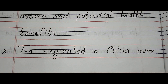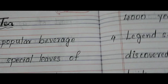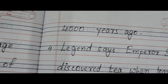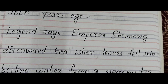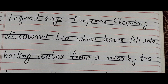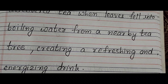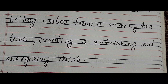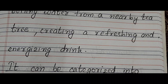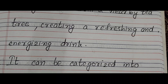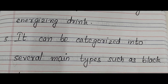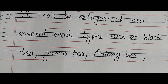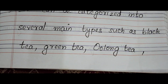Tea originated in China over 4,000 years ago. Legend says Emperor Shennong discovered tea when leaves fell into boiling water from a nearby tea tree, creating a refreshing and energizing drink. It can be categorized into several main types such as black tea,